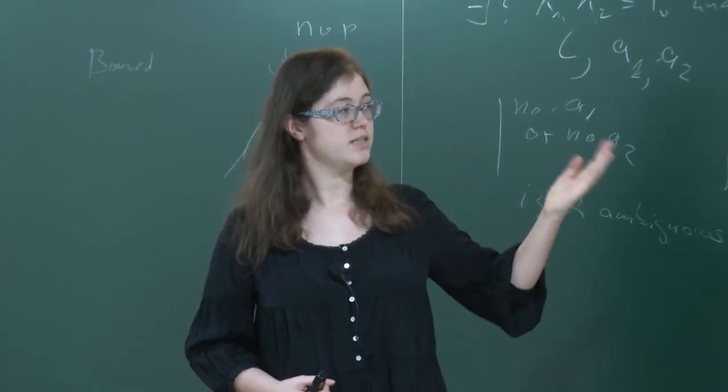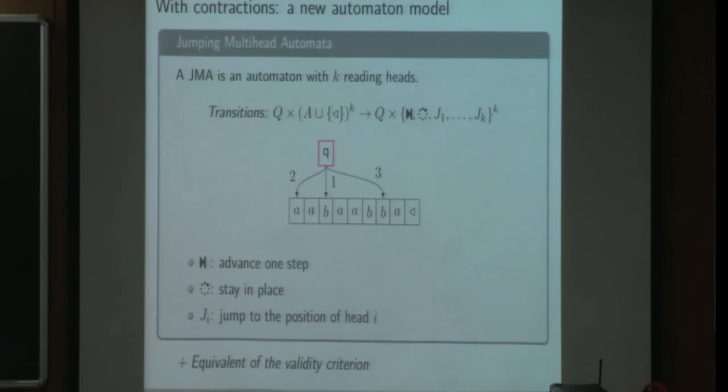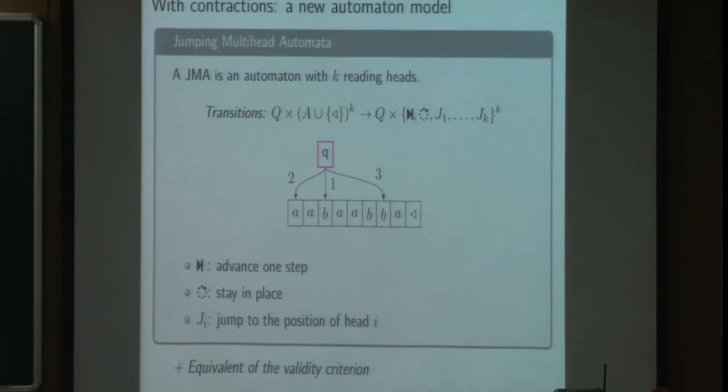So it has a set of states, an alphabet, and a transition where we read a k-tuple of letters. And then each head can either stay in place, move one step, or jump to the position of another head. And we add also an equivalent of the validity criterion we have on proofs to this model.